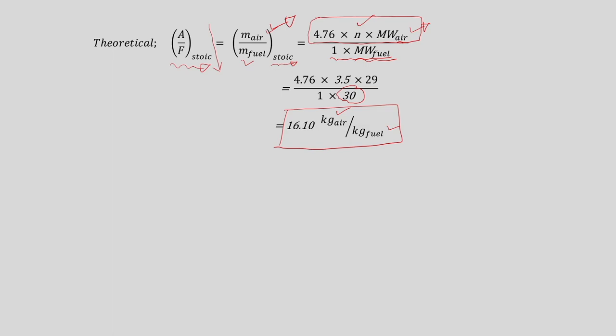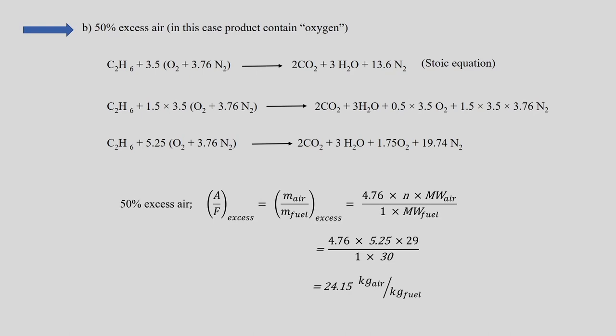The second question asks: if 50 percent excess air is supplied for the combustion process, how do we find the amount of air required? We consider the same concept — 50 percent excess air. After balancing with the theoretical air first, we obtained the stoichiometric equation.